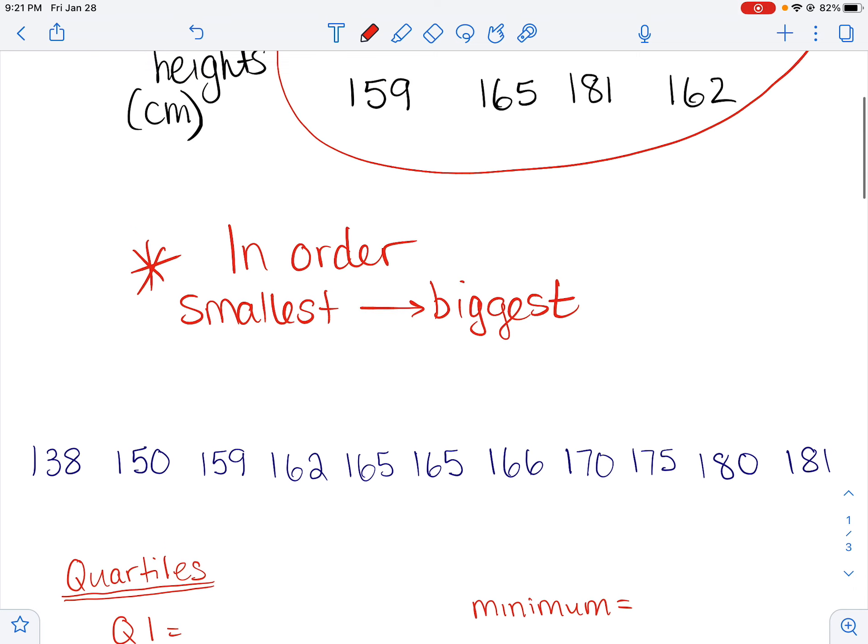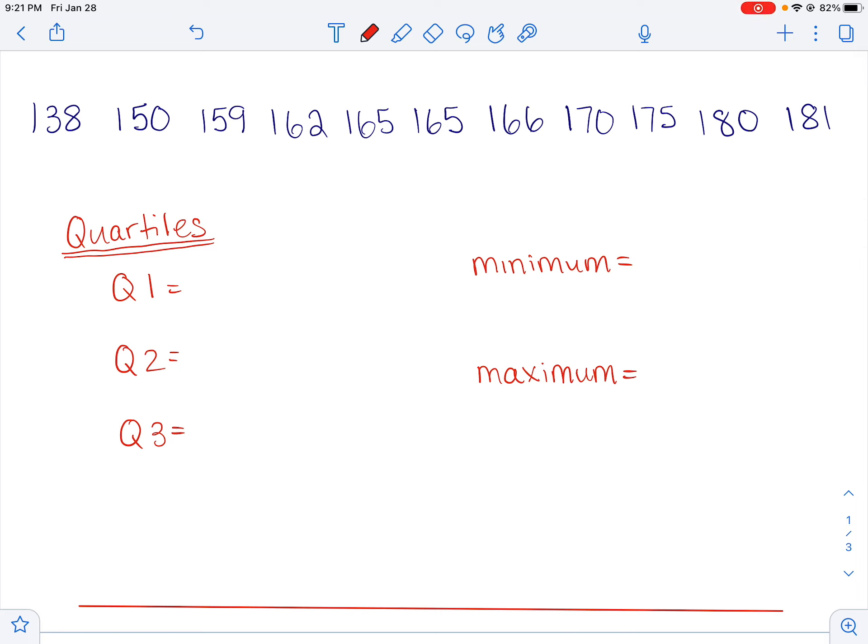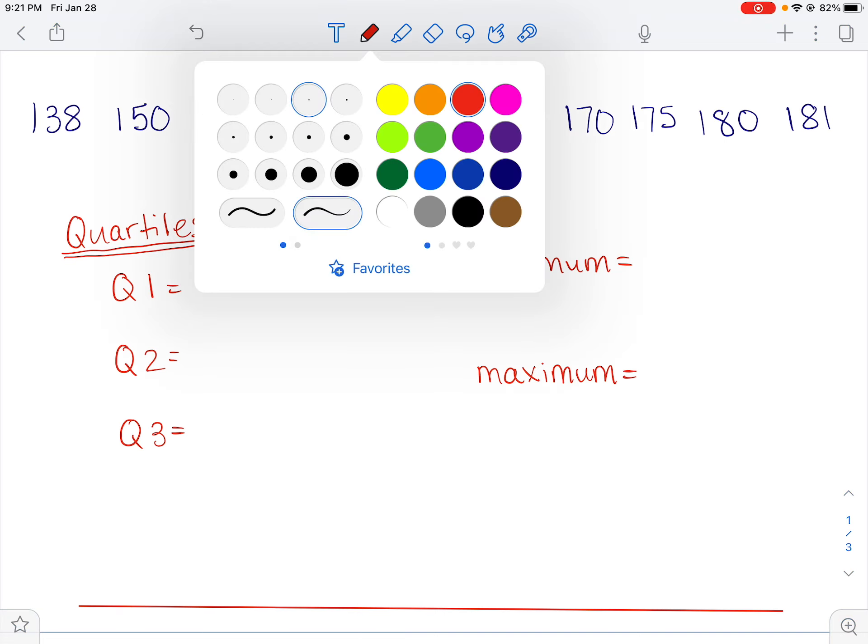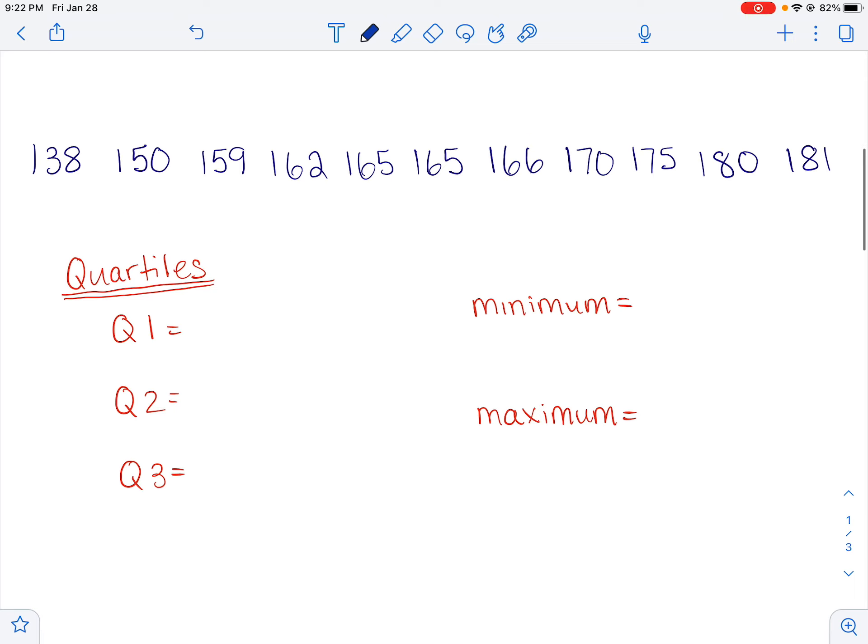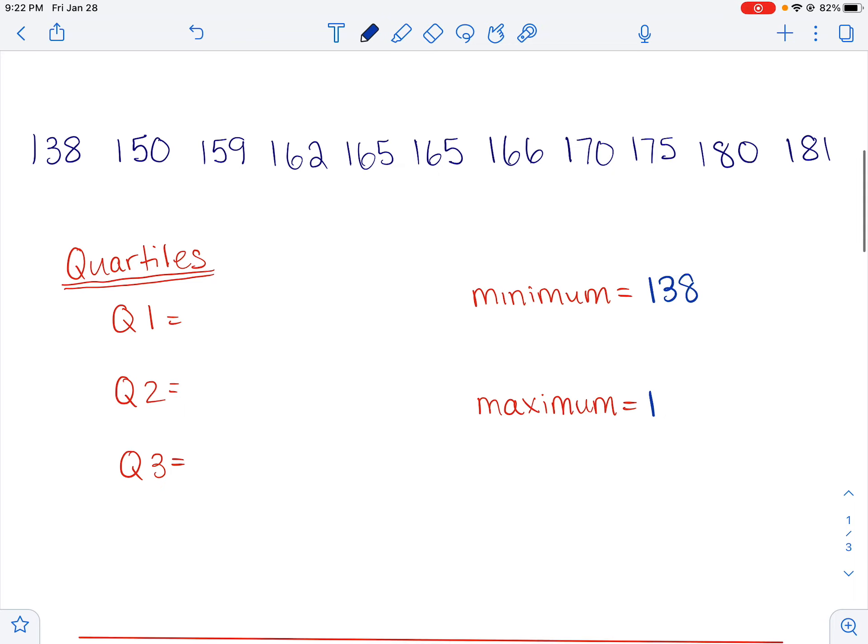So I already did that. I put my data in order. So these are all my heights: 138, 150, et cetera. And then basically what you're going to do next is you're just going to split the data into four sections called quartiles. We're also going to find the smallest piece of data and the biggest piece of data. Let's start there. That seems like the easiest. So the minimum, the smallest number in the whole bunch of heights here is 138 centimeters. And then our tallest person is 181. So that's our maximum height.